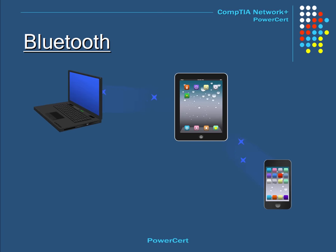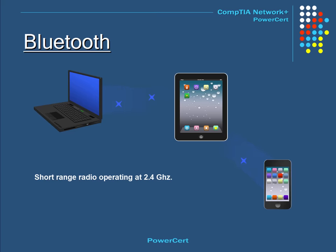Bluetooth is a short-range radio that provides a way to connect and exchange information between devices such as laptops, cell phones, and tablets. It operates at 2.4 gigahertz and is capable of transmitting both voice and data. The latest Bluetooth standard has a transfer speed of 24 megabits per second and a maximum range of approximately 100 meters.